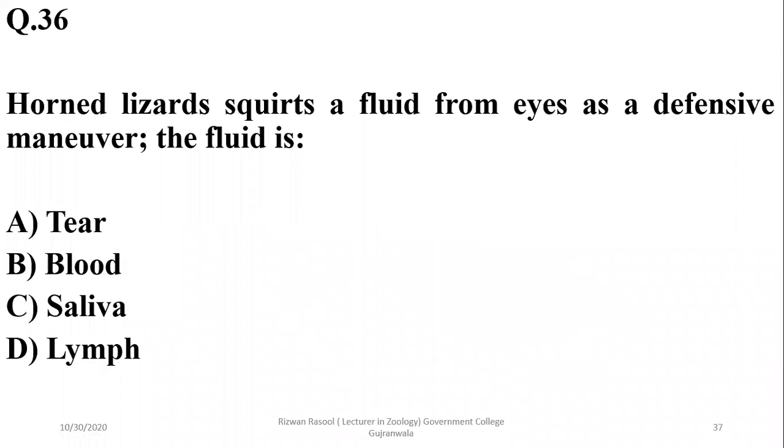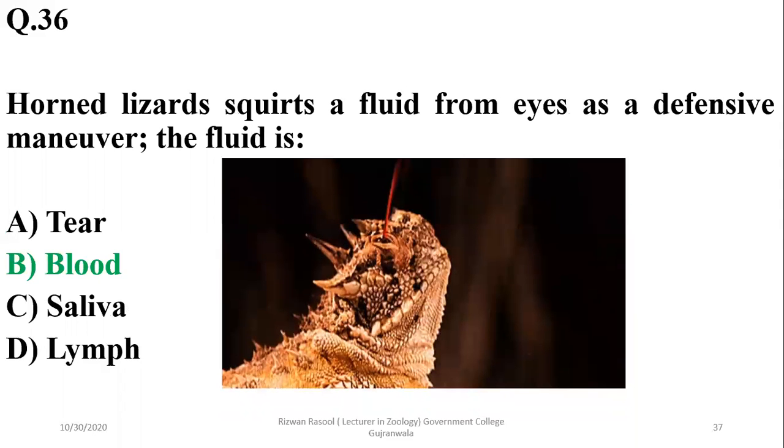Question thirty-five: horned lizards squirt fluid from their eyes as a defensive mechanism. The fluid is actually blood.